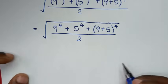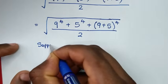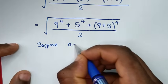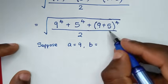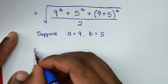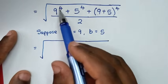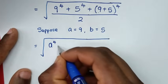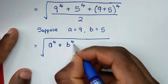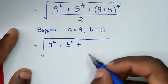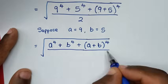Then in the next step, we let a = 9 and b = 5. So our expression will be equal to square root of a to the power of 4 plus b to the power of 4 plus (a+b) bracket to the power of 4, over 2.